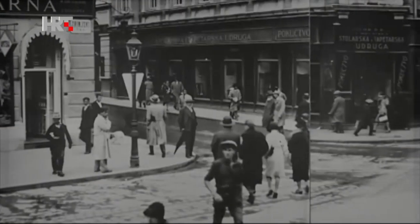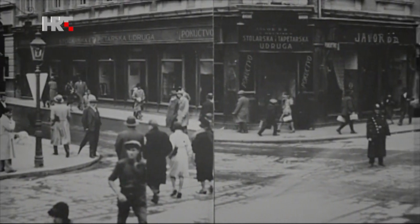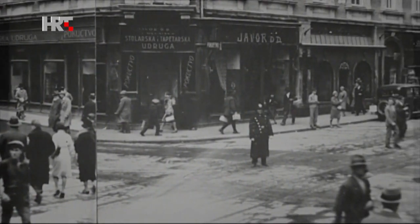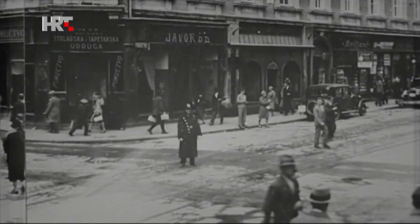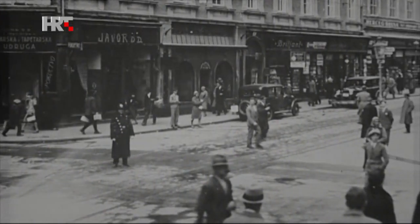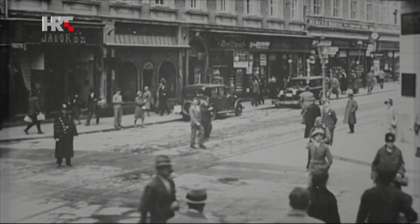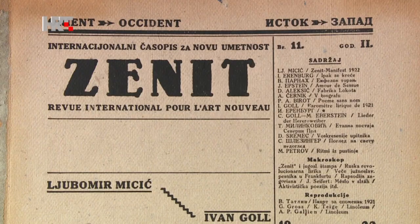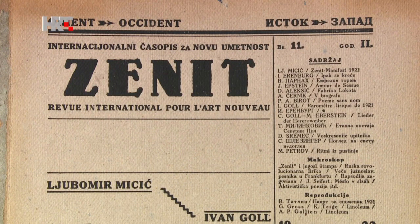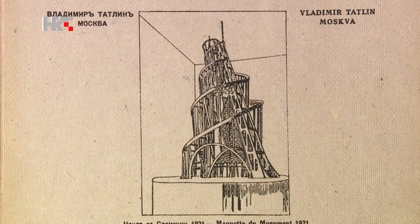Zagreb was then a lively cultural center where he had the opportunity to become acquainted with international and domestic artistic movements. In 1921, Zenit was launched in Zagreb, an international magazine oriented toward avant-garde painting and new concepts.